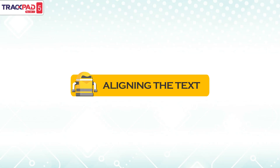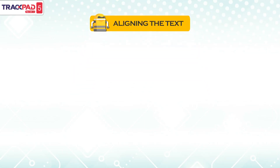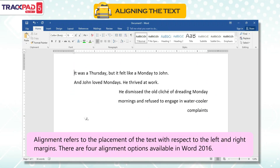Aligning the text. Alignment refers to the placement of the text with respect to the left and right margins. There are four alignment options available in Word 2016.